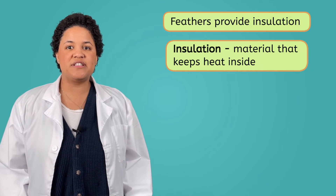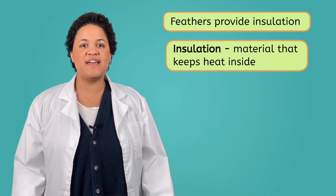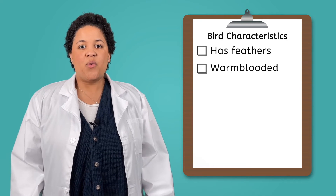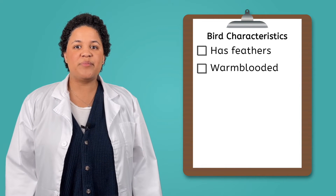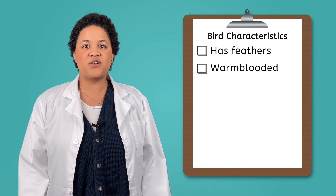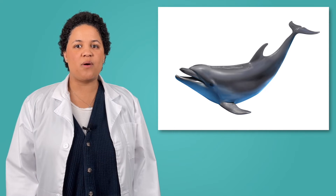Feathers also provide a bird with insulation. Insulation is a material that stops heat from moving around, so feathers keep warmth inside a bird's body. Birds, like mammals, are warm-blooded creatures, which means they don't adjust to the temperature of the outside air and they need help staying warm when it is cold outside. Just like dolphins use blubber to keep them warm in the water, birds' feathers work like a jacket, protecting the body and keeping it warm.